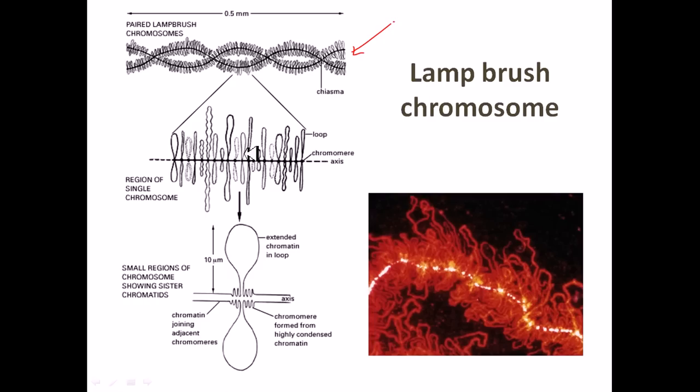It's called lampbrush because it looks like a brush-like structure or bottle washer-like structure. This is the actual structure of lampbrush chromosome.